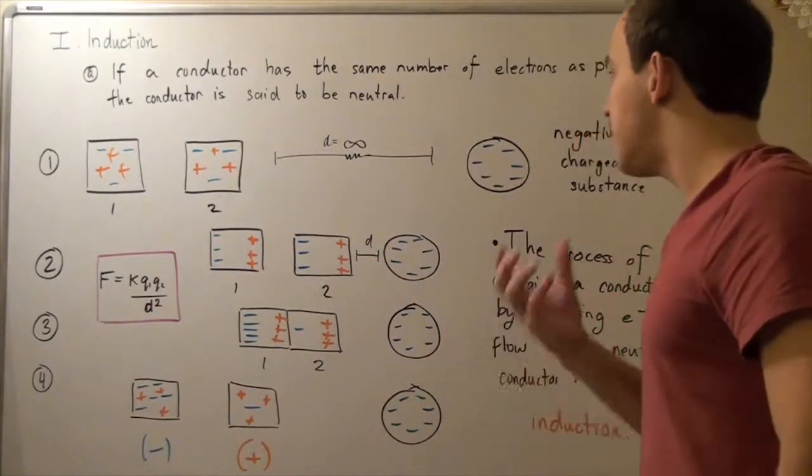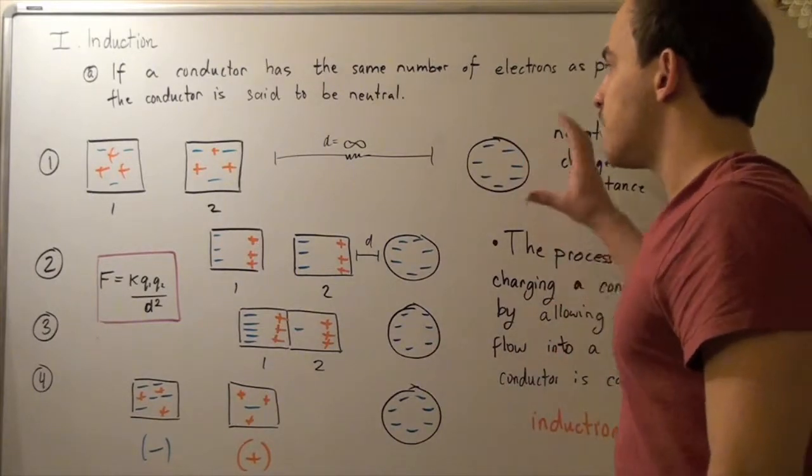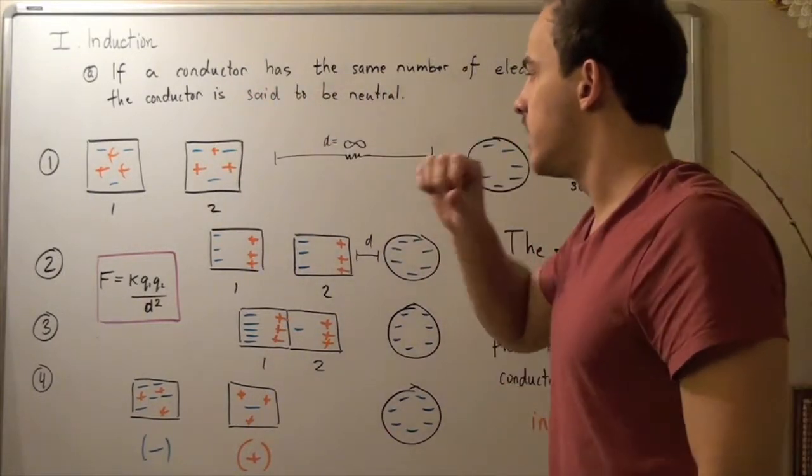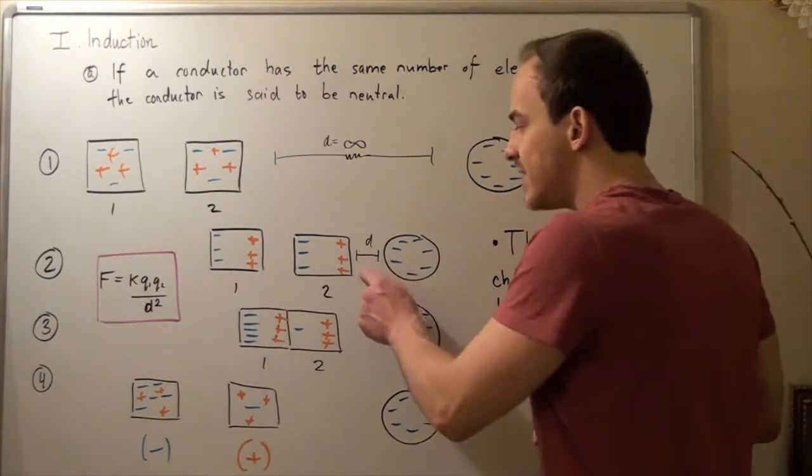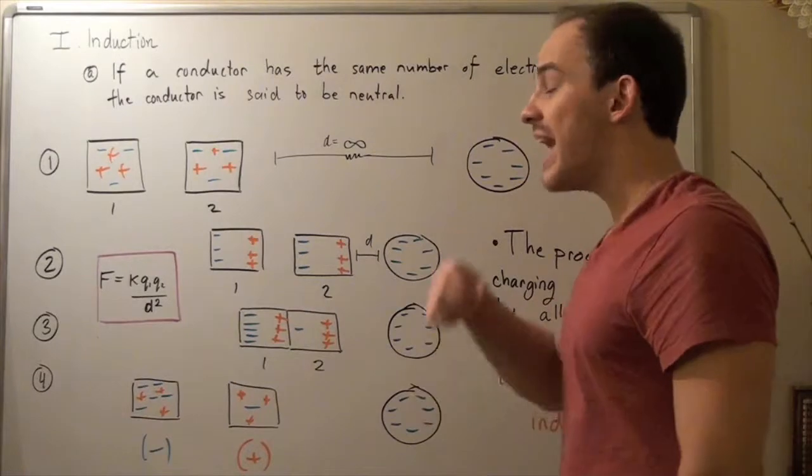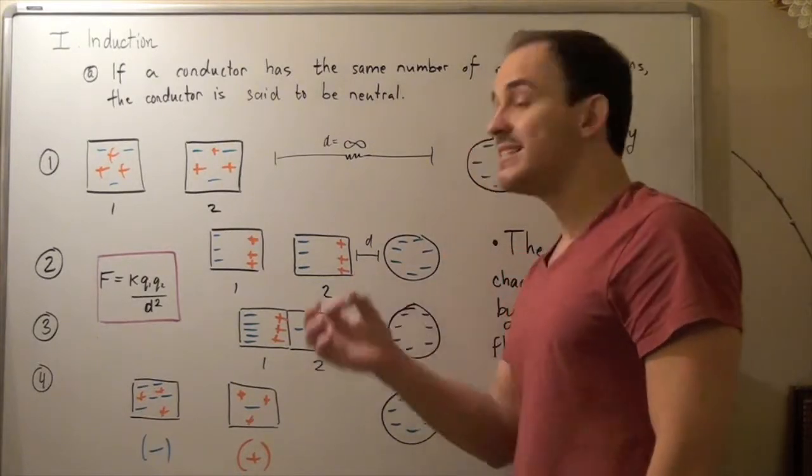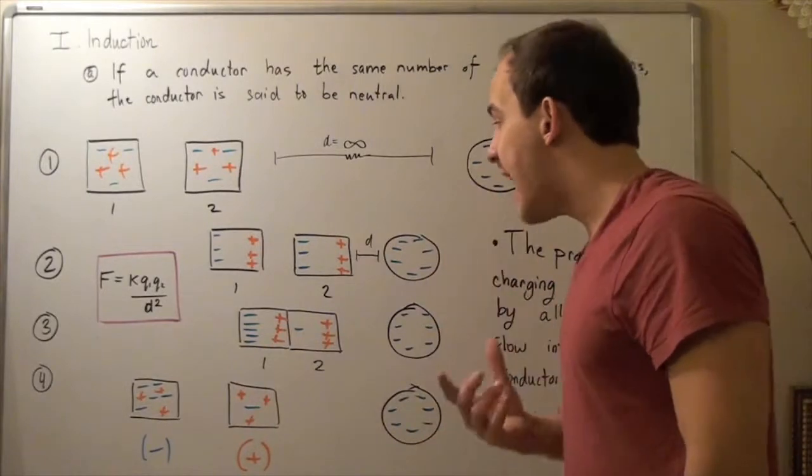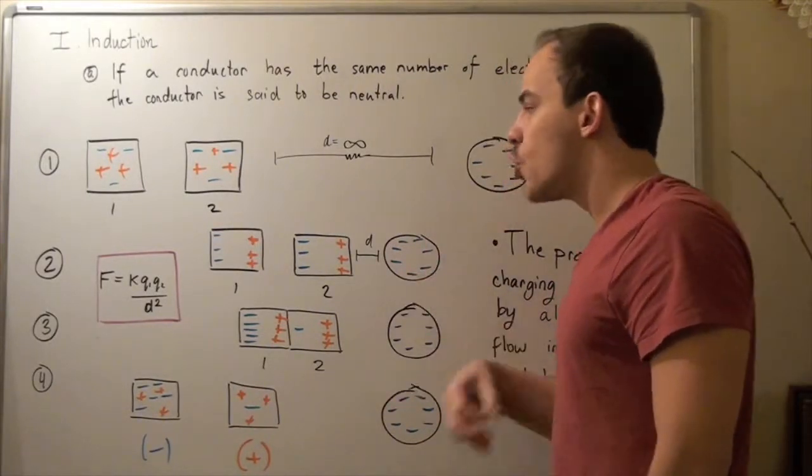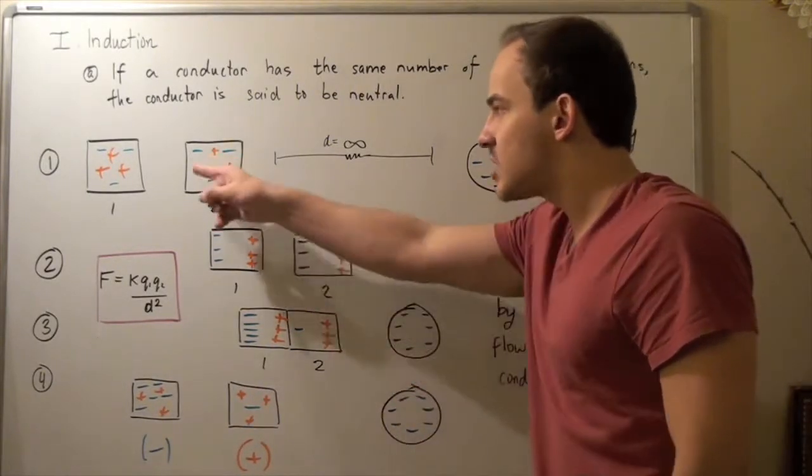Suppose I begin moving this all the way to number two, next to conductor number two, and suppose I move it a distance d away. My distance is small enough now, it's tangible, it's no longer infinity. And now these charges will affect these charges.